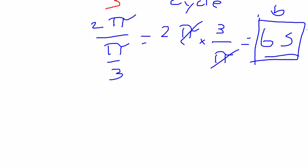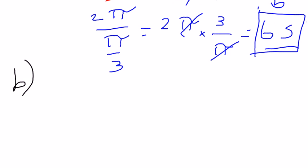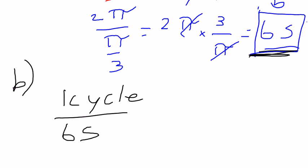Part B asks for, well, okay, 6 seconds, how many of these are we going to have in a minute? So if it's 1 cycle every 6 seconds, how many are we going to have in a minute? How many cycles per minute?